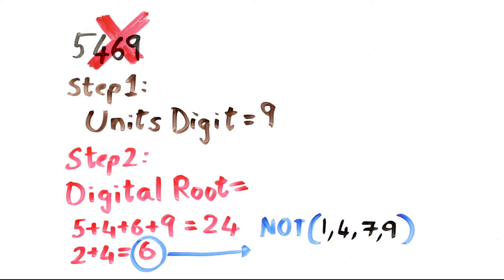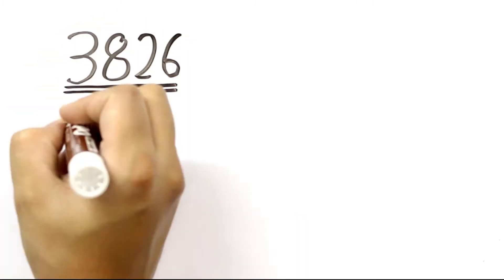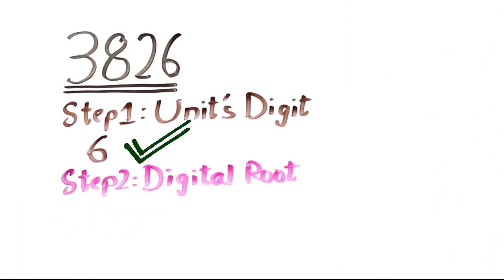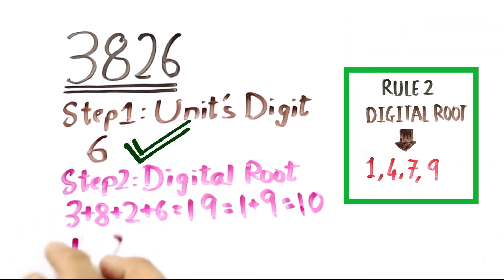But some numbers pass both these tests and yet they don't turn out to be perfect squares. So let's take an example, 3826. It ends with a 6 so fits in our first rule, and its digital root is 1. It fits in our second rule as well.